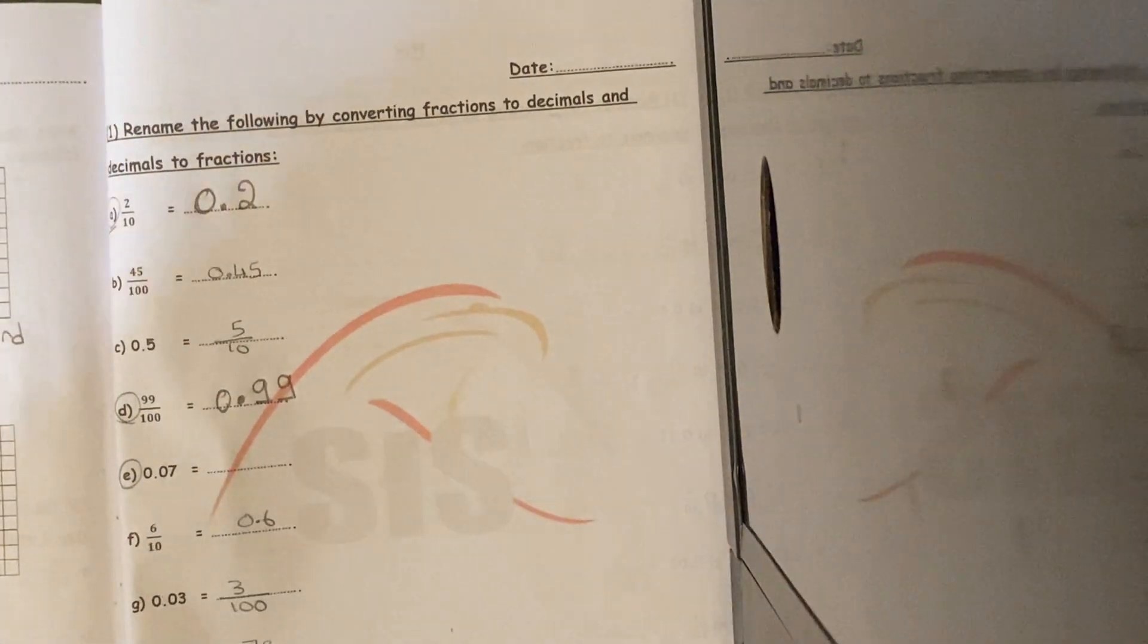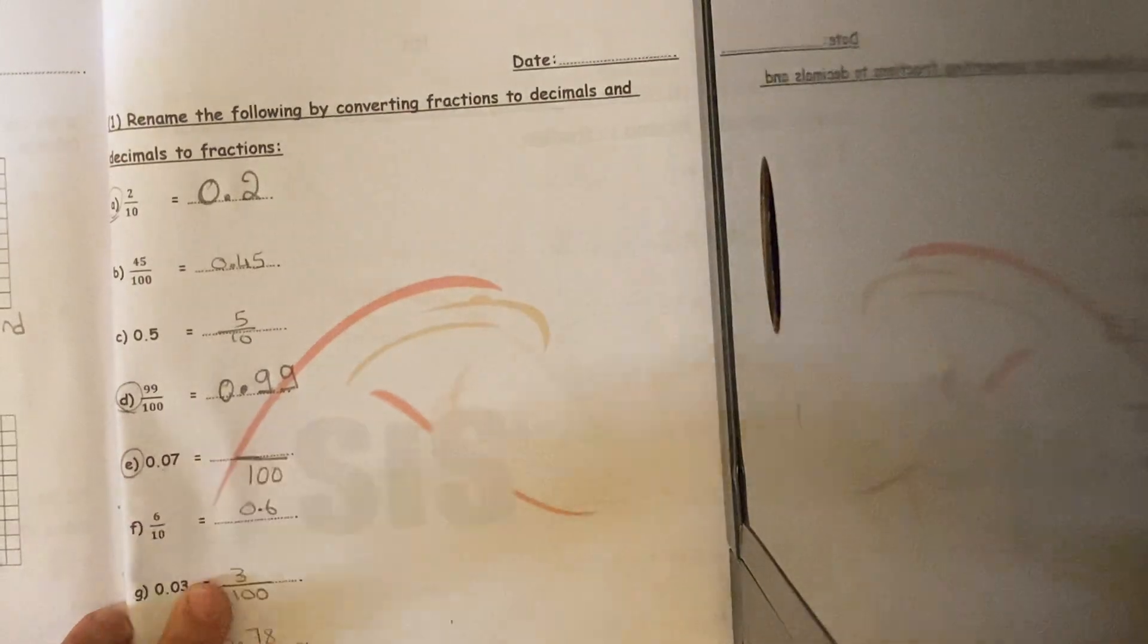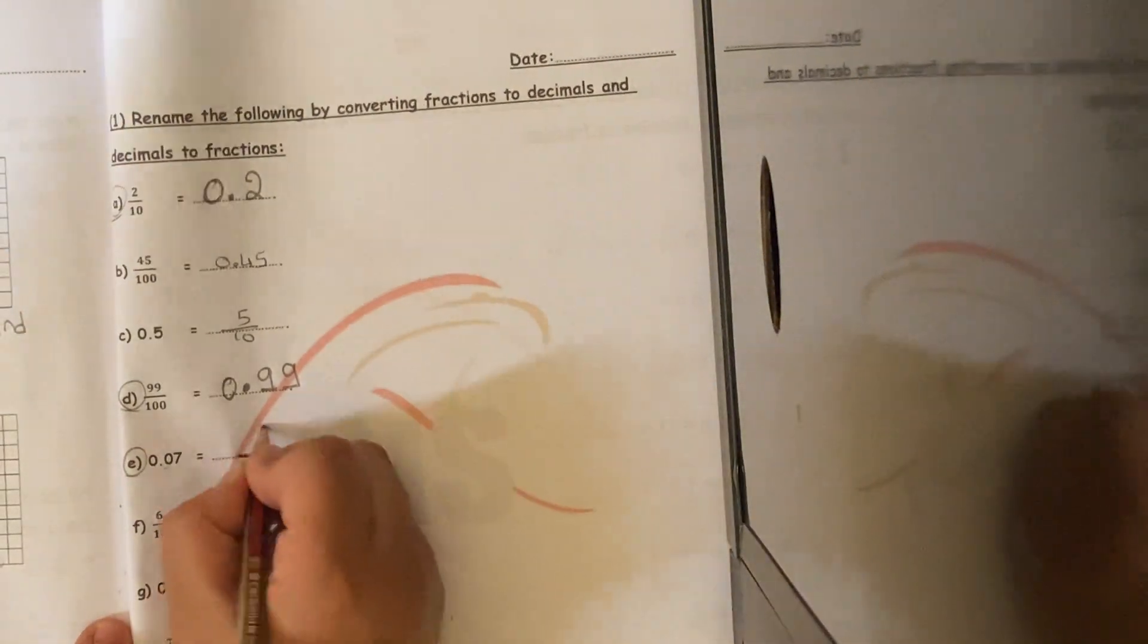Here, 0.07. First of all, I'm over 100 because I have 2 chairs. What number I'm going to write is the 7.